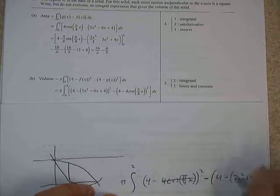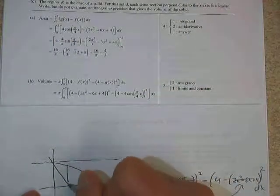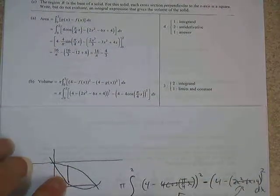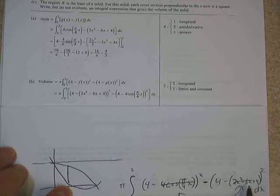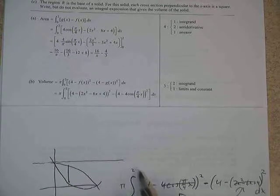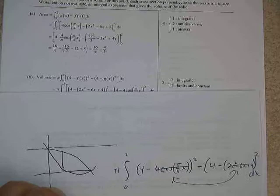And they gave 3 points for that, 2 for having the integrand right, and then the 4 minus the top squared. You know what? I did that backwards, sorry. That's the, should be these two switched. So the bottom function is the parabola, which needs to be the outside radius. So 4 minus the parabola, 4 minus the cosine in this one. So 2 there, and then also 1 for having the limits and the constant, so having the pi and the 0 to 2.